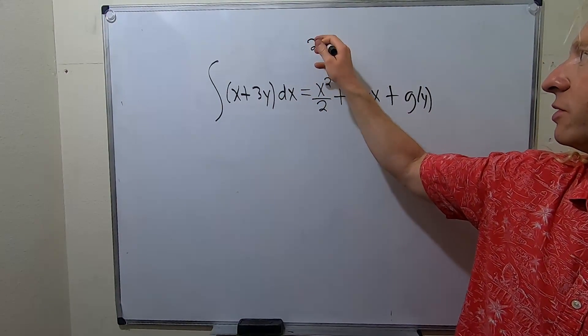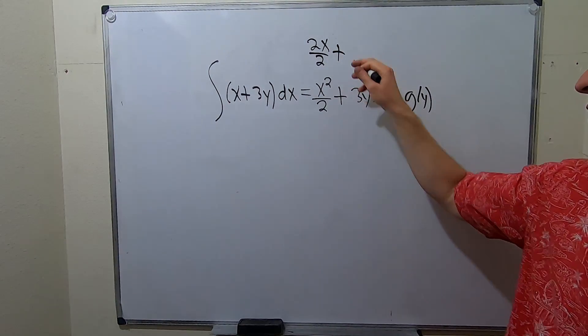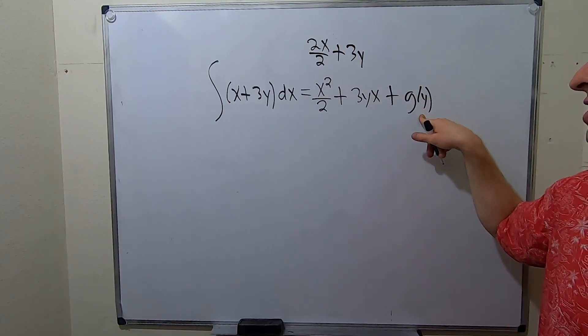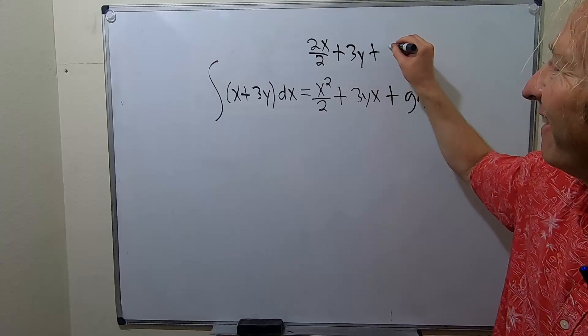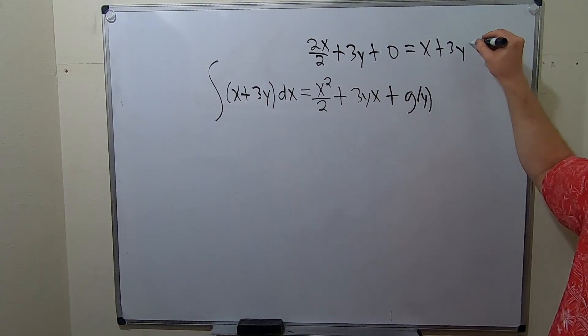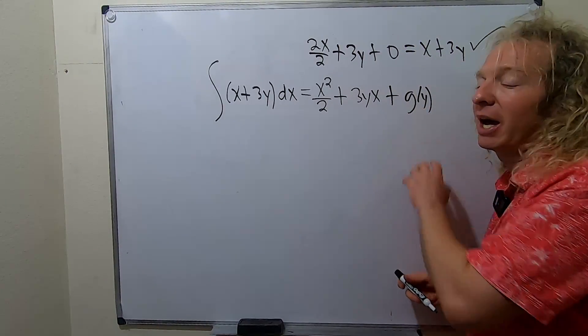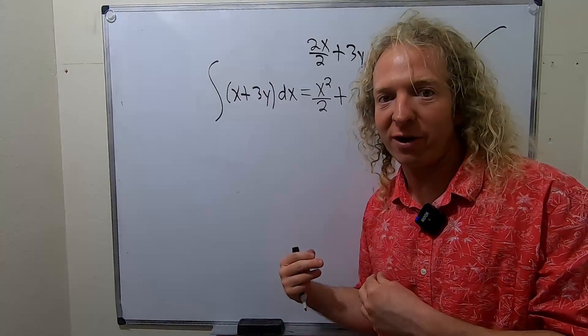If you differentiate this, you get 2x over 2. If you differentiate this, you're just going to get 3y. If you differentiate this, you're going to get 0. So you just get x plus 3y. Super awesome. So that's why you have to add an unknown function of the other variable.